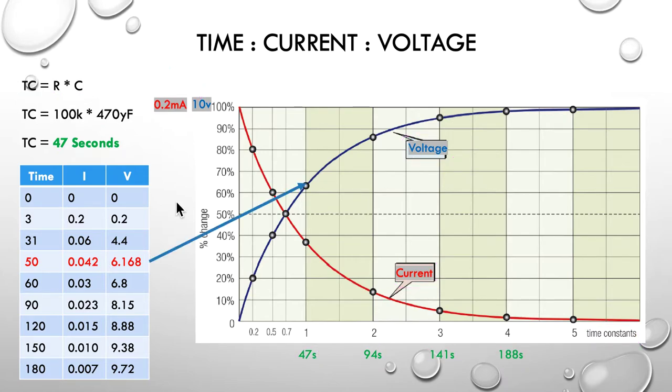So what we've done here is we're at 50 seconds, which is close enough to 47 as our first time constant. And if we project back, we should project back at about 47, about 62%, or 6.2 volts. Not far off, 6.2 volts at our first time constant.